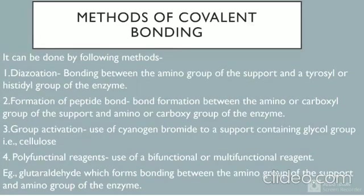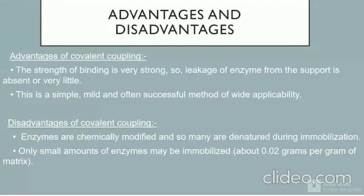Methods of covalent binding: first, diazotization — bonding between the amino group of the support and tyrosyl or histidyl group of the enzyme. Second, formation of a peptide bond — between the amino or carboxyl group of the support and amino or carboxyl group of the enzyme. Third, group activation — use of cyanogen bromide with a support containing glycol groups such as cellulose. Fourth, polyfunctional reagents — use of a bifunctional or multifunctional reagent such as glutaraldehyde. Advantages: very strong bonding, simple, mild, and often successful. Disadvantages: enzymes are chemically modified and may be denatured, and only small amounts of enzyme may be immobilized.